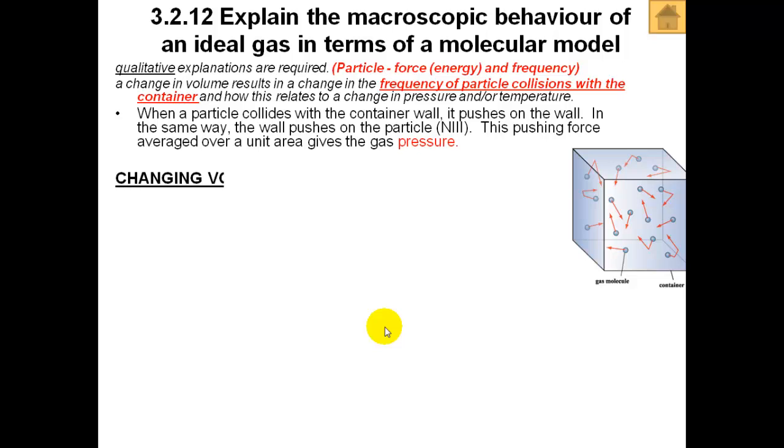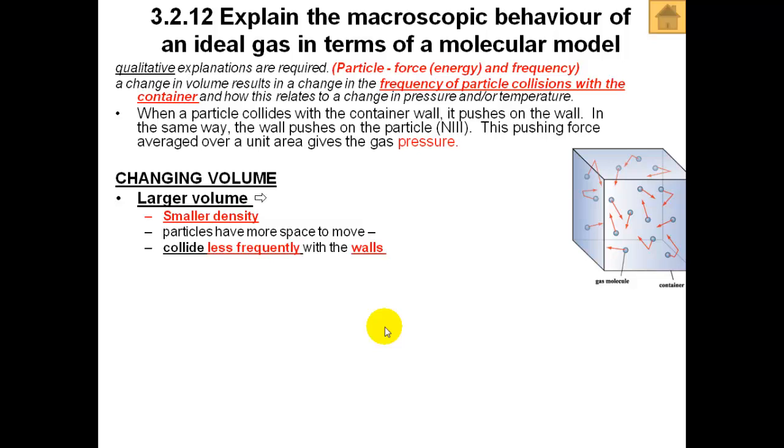So what happens if we change the volume? Let's say we have a larger volume. What will happen? Larger volume means a smaller density, which means the particles have more space to move. They collide less frequently because they have more space with each other, and in particular with the walls of the container, and therefore the pressure will be lower.